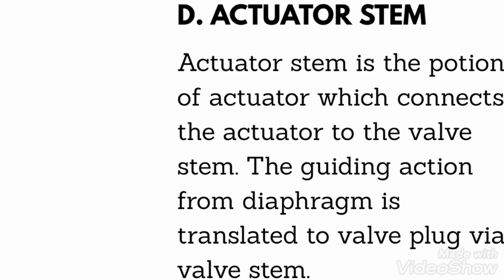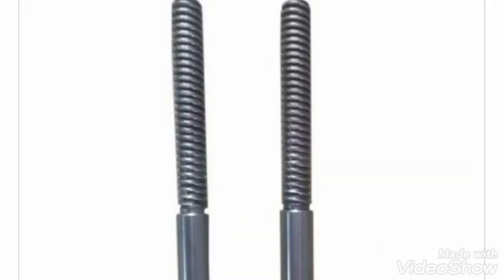The next part is the actuator stem. The actuator stem is the portion of the actuator which connects the actuator to the valve stem. The guiding action from the diaphragm is translated to the valve plug via the valve stem. Here you can see the actuator stem, which is fixed with the diaphragm and with the stem coupling.